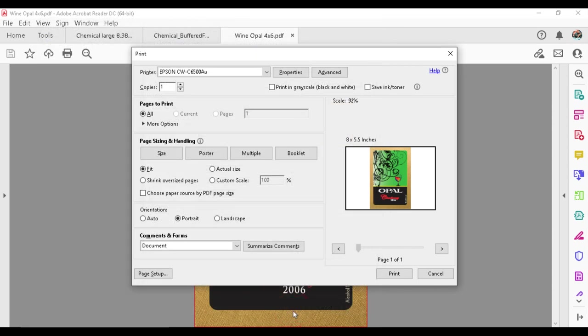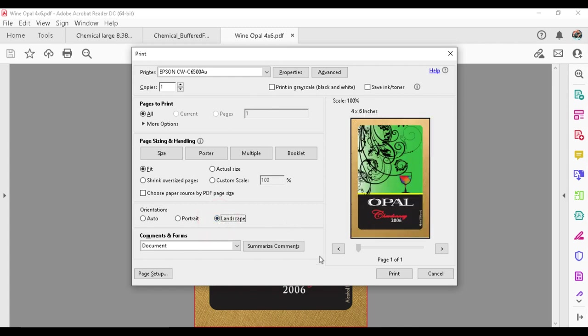And now just to make that a full label, we're going to go, in this case, choose landscape. So now we have a full four by six label. And that will print off now.